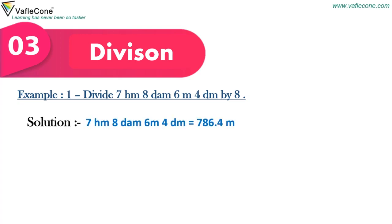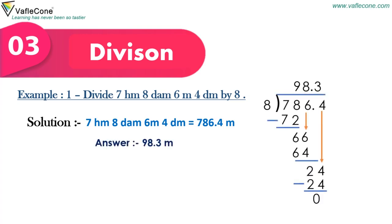7 hectometer, 8 decimeter, 6 meter, 4 decimeter is equal to 786.4 meter. So answer is 98.3 meter.